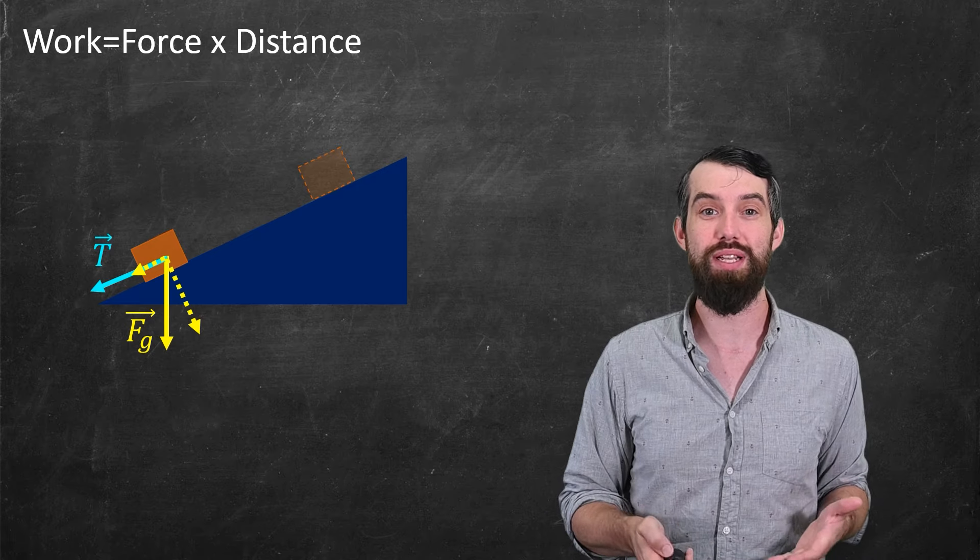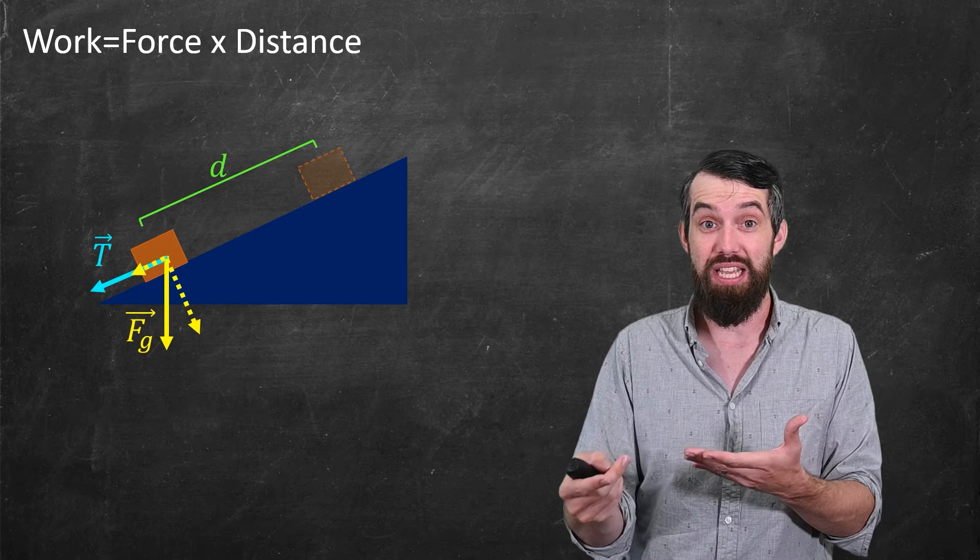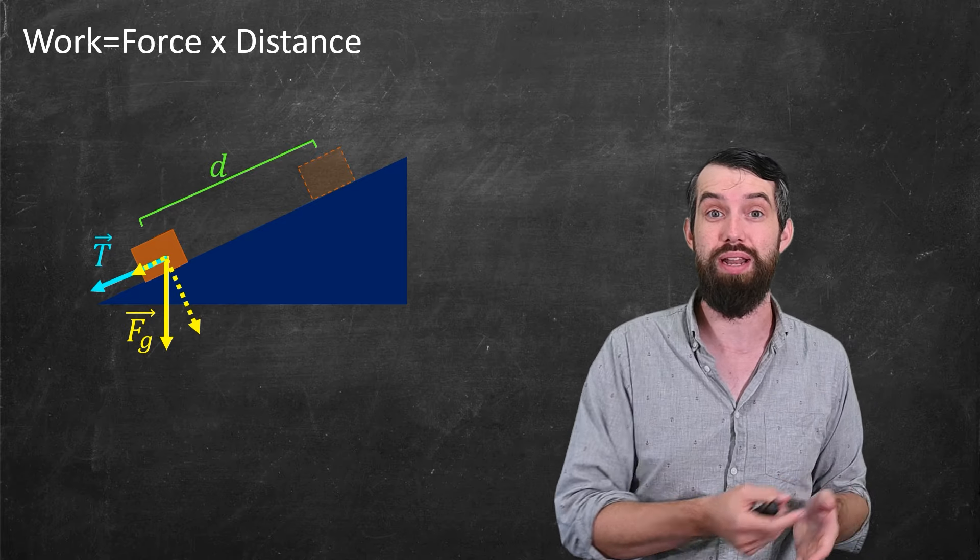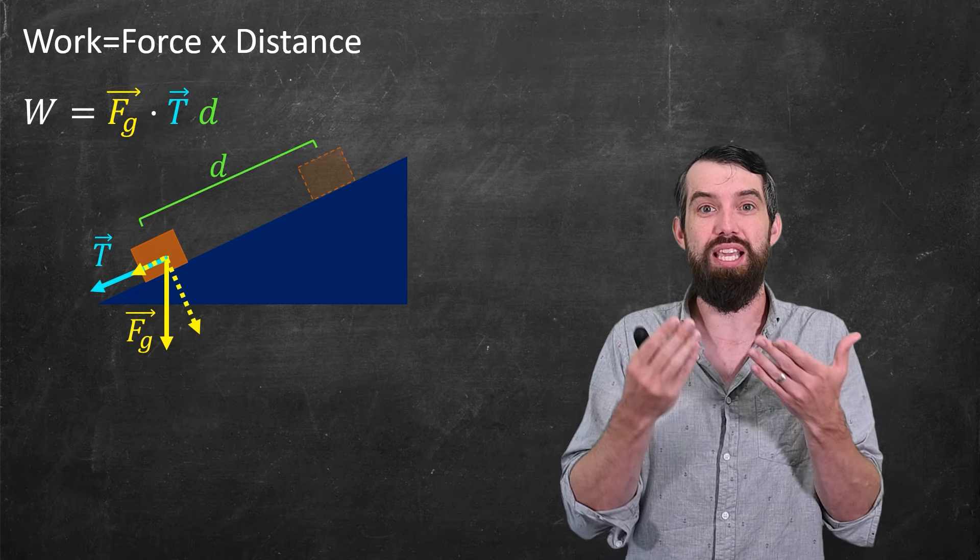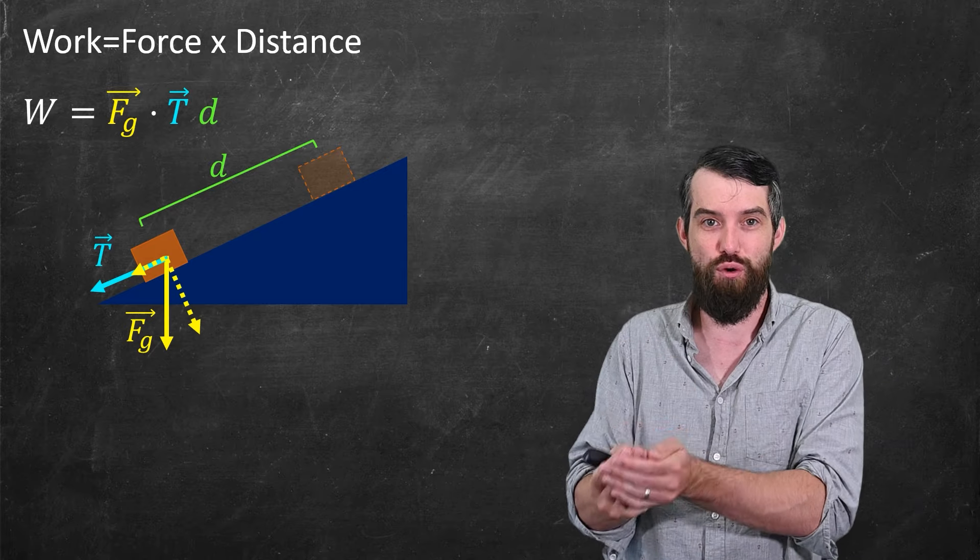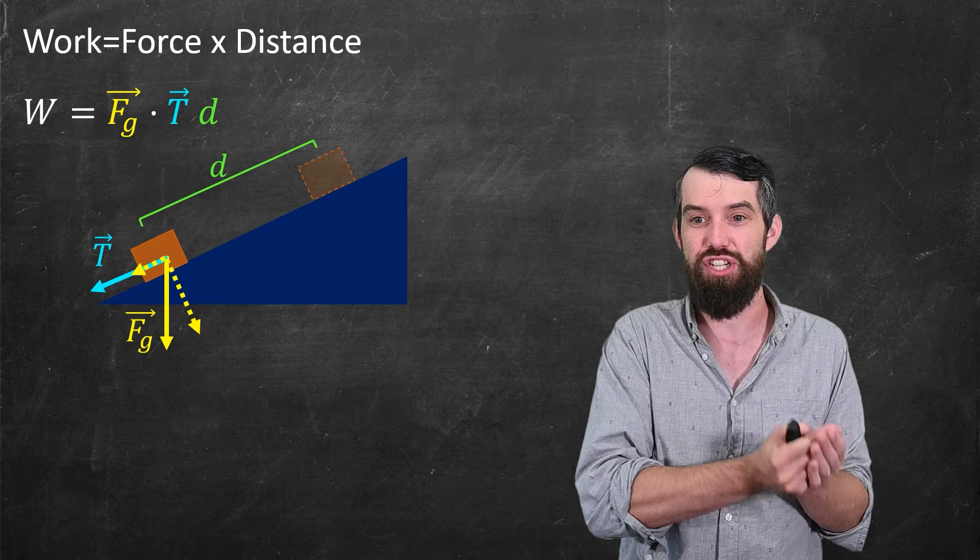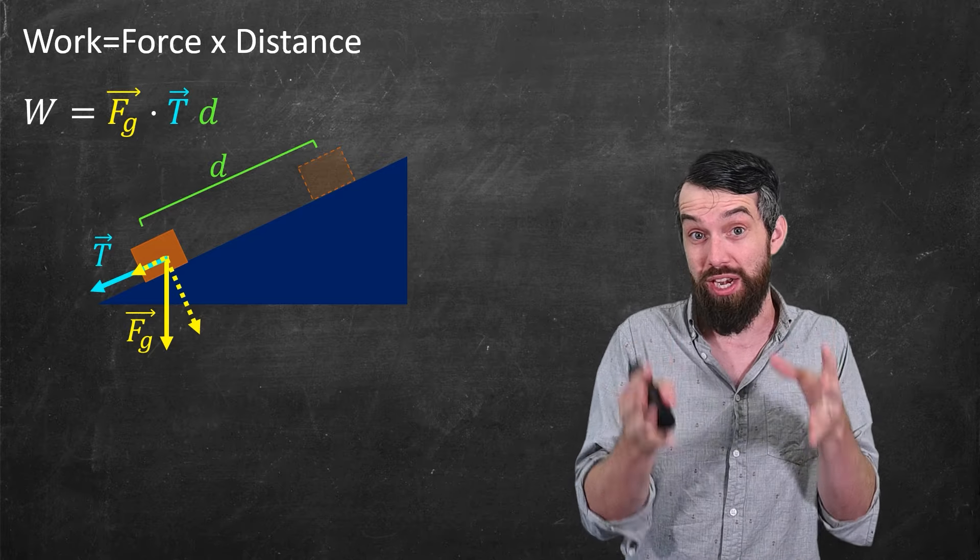So how much work is actually being done? Well if we say that there is a distance d between where the block started and where the block ended up, then what we can talk about is the dot product, the proportion of the force of gravity in that tangential direction. That's the force that we're interested in.